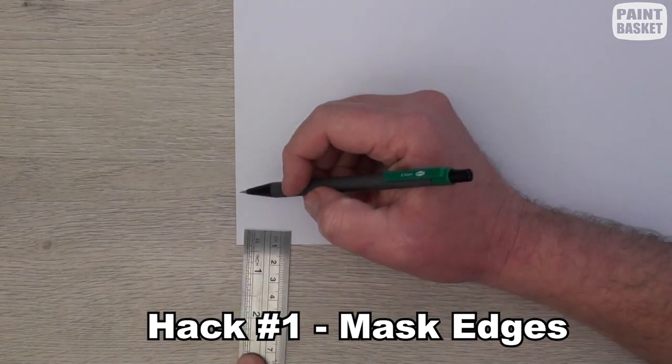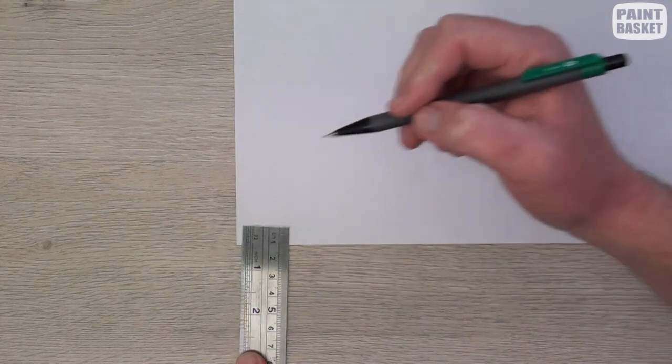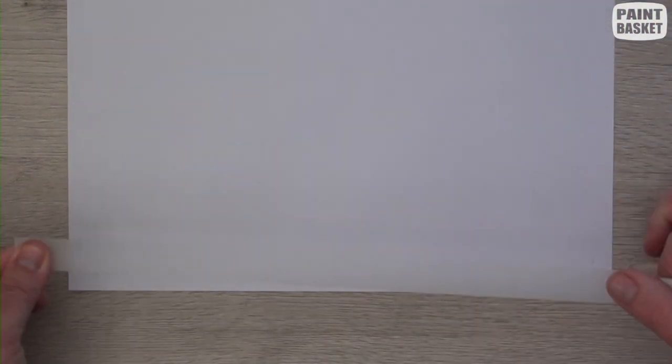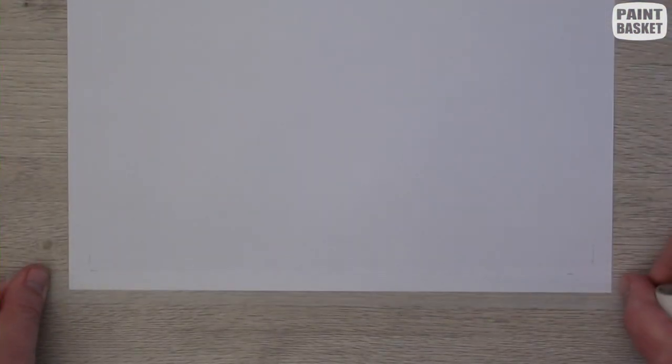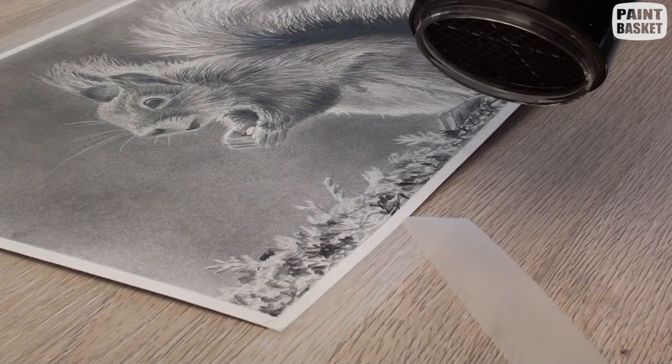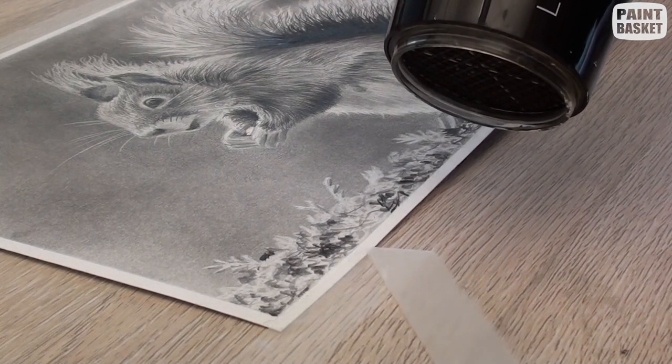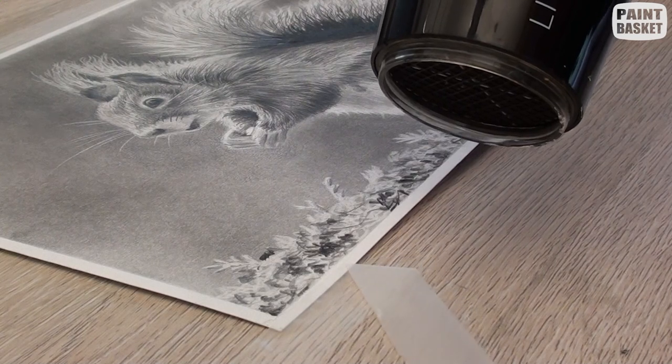Use scotch tape around the edges of your drawing. Measure equal distances all the way around the paper and then carefully mask off the edges using scotch tape. When the drawing is complete, use a hairdryer to gently lift off the scotch tape and that'll leave you with a beautiful border all the way around your drawing, giving it a professional finish.